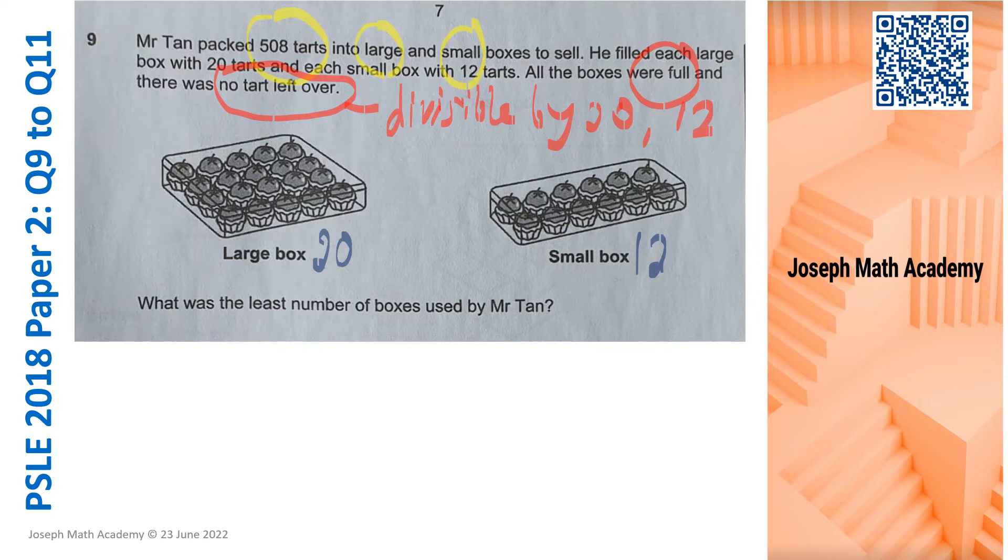Now, to help Mr. Tan find out how many boxes he used, the least number of boxes, we should know very well that he must have used as many large boxes as possible before he used the small ones. Now looking at the tarts again, 508 tarts packed into boxes of 20. We have 25.4. 25.4 means there are 25 boxes, full boxes, and with remaining tarts unpacked. So definitely cannot be 25 large. This is impossible. So we're going to move on to 26 now.